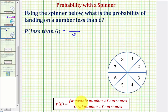Now we want to determine the favorable number of outcomes which would be the numbers that are less than six. Notice that six is not less than six, so the numbers less than six would be one through five.